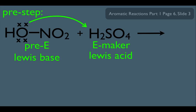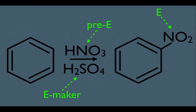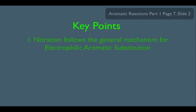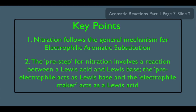And again, if H2SO4 protonates the OH in HNO3, the OH becomes H2O. So there it is, our overall reaction. This is how we add a nitro group onto a benzene ring. And let's look at our key points. What have we learned here? Number one, that nitration follows the general mechanism for electrophilic aromatic substitution. And that two, the pre-step for nitration involves a reaction between a Lewis acid and a Lewis base. The pre-electrophile acts as a Lewis base, and the electrophile maker acts as the Lewis acid.